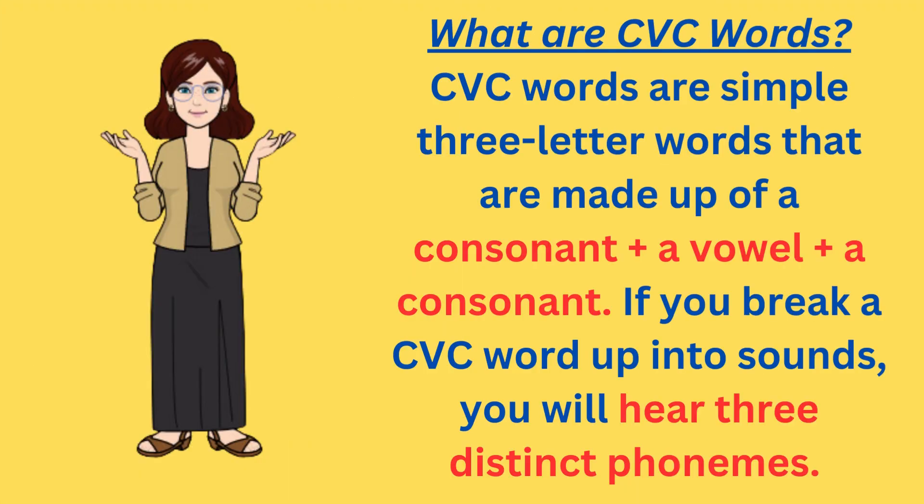What are consonant vowel consonant words? Consonant vowel consonant words are simple three-letter words that are made up of a consonant plus a vowel plus a consonant. If you break a CVC word into sounds, you will hear three distinct phonemes.